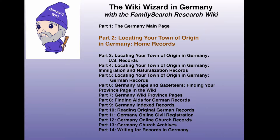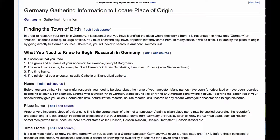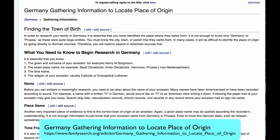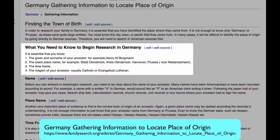This is the second video in a series intended to help you use the different tools of the FamilySearch Research Wiki to find records about your ancestors in Germany. In order to get to the records, you have to know the town of origin. The article 'Germany Gathering Information to Locate Place of Origin' will act as a checklist to different records where you might possibly find that town of origin. This is the information you need to match between the records in the United States and the records in the home country to know that you found the right person.